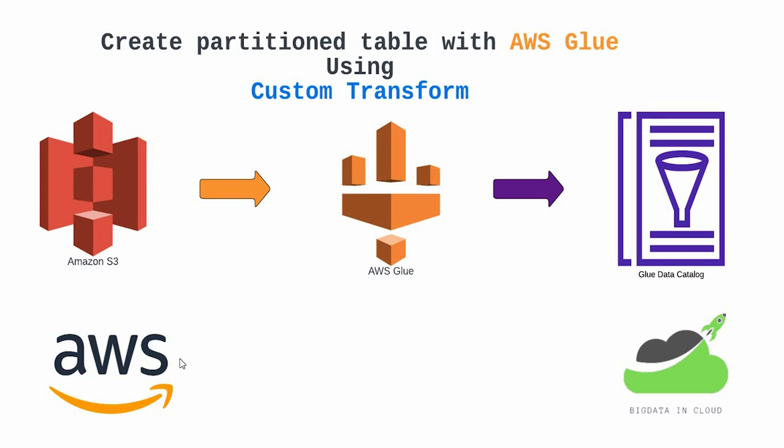In this video I will discuss how we can create a partition table with the help of AWS Glue. We'll create a partition table from a simple CSV file containing a million records using AWS Glue's custom transform. That file has a column called date, and we'll convert that date into year, month, and day, and create a partition table on the basis of year, month, and day. We'll store the partition results in S3 and also create a Glue catalog table from that.